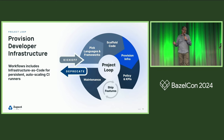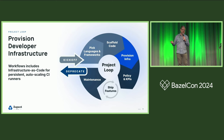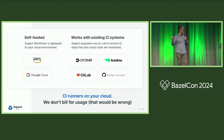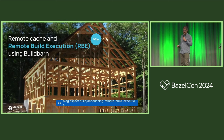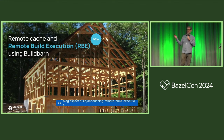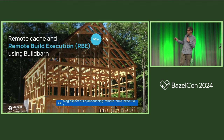Next, you'll need to provision your developer infrastructure. Workflows is very well known as the infrastructure-as-code layer to spin up persistent auto-scaling CI runners. Those live in your cloud and work with your existing CI system — we don't want to make you do any migrations. We don't bill for usage because our goal is for you to use less. We've used Build Barn as our remote cache layer from the beginning, and a couple weeks ago we added remote build execution also using Build Barn. This is now live at one of our biggest customers, and they've already been using it, so we do have RBE.